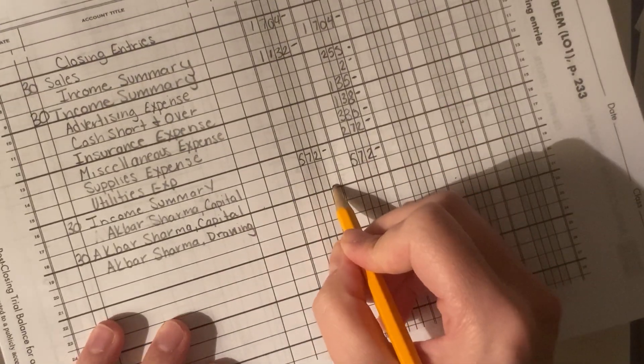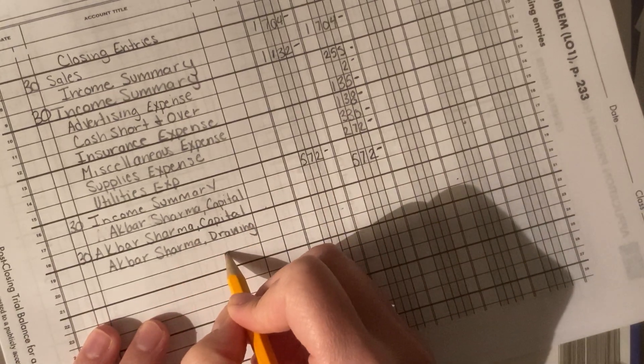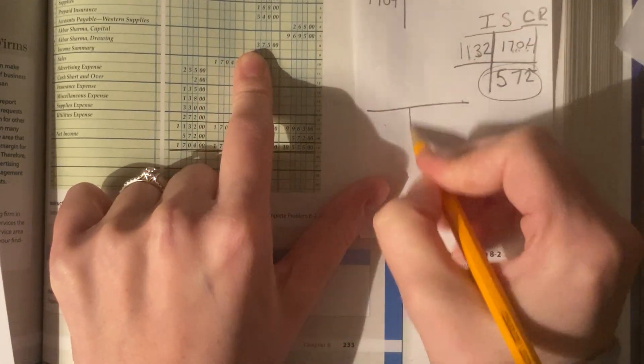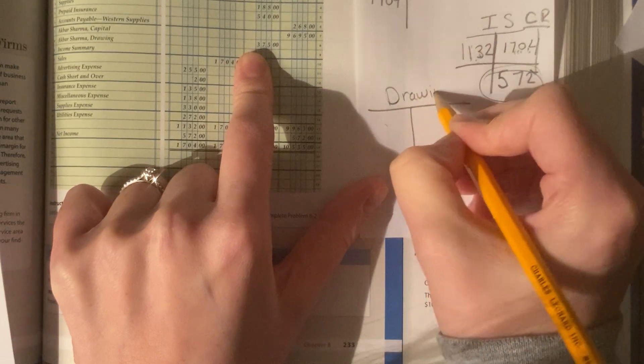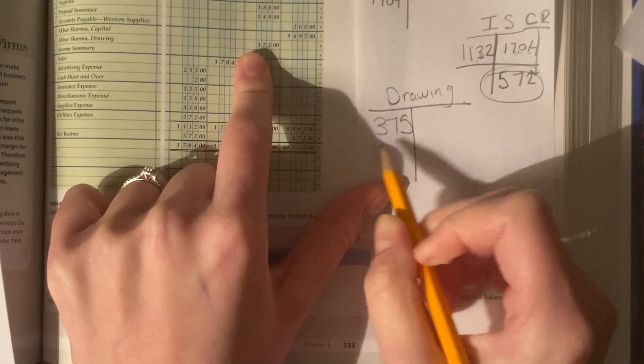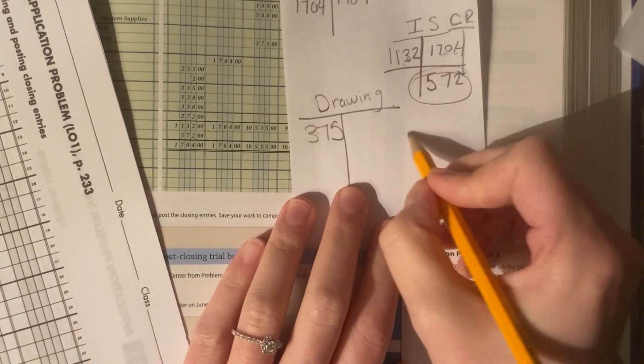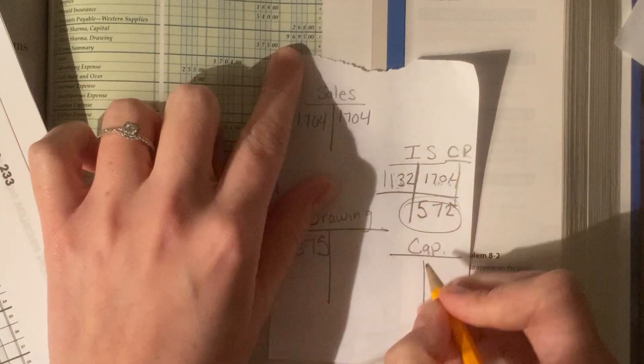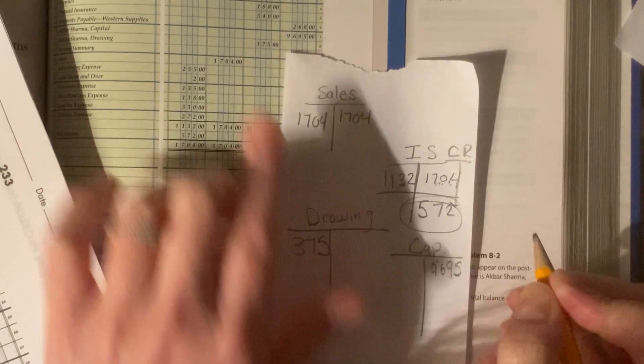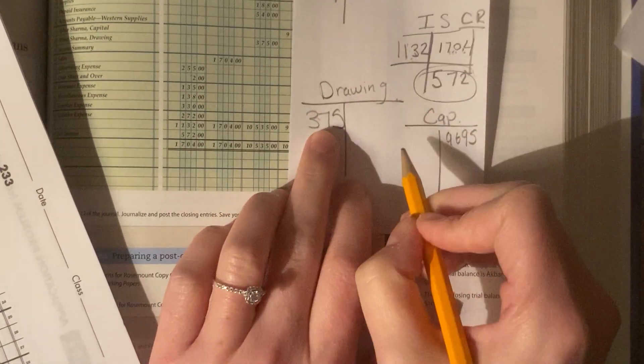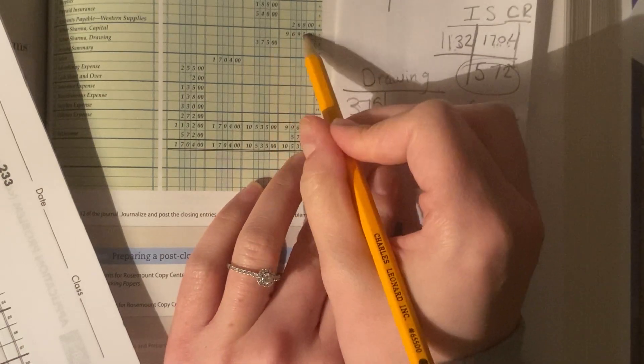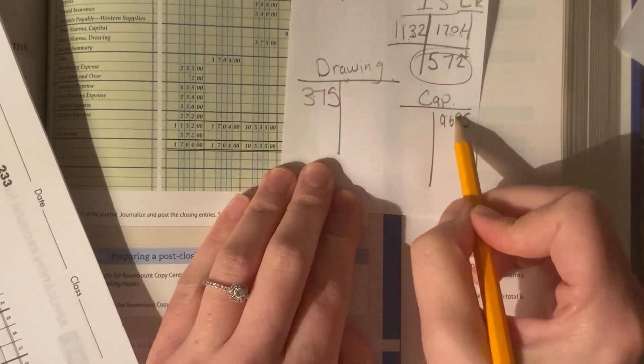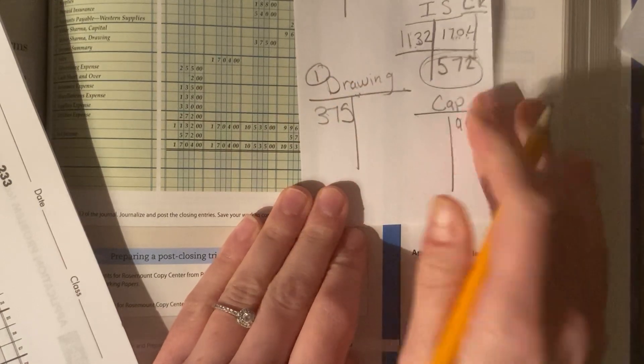Last one is capital and drawing. We want to close out the drawing account to our capital account. So, our drawing has a balance of $375. If money is being drawn out of the company, that means it's being decreased. So, let me show you something. Here's our capital account. We have the $9,695. Well, our drawing account is $375. It shows it right here, okay? Putting it right here. Well, we need to close out our drawing account to our capital account. So, our first step is to close out the drawing. $375.